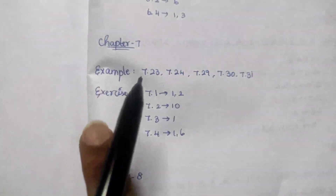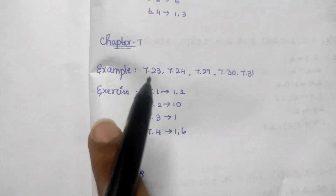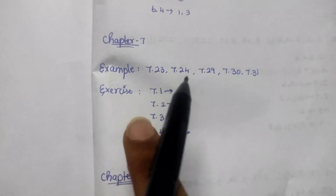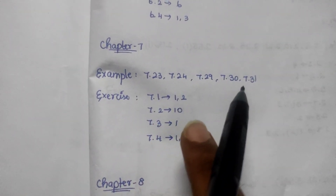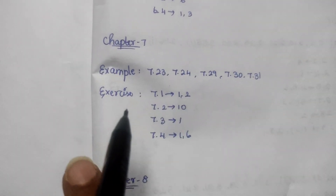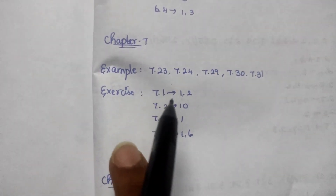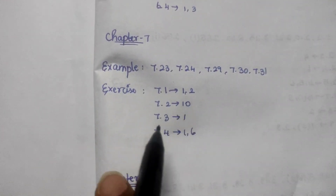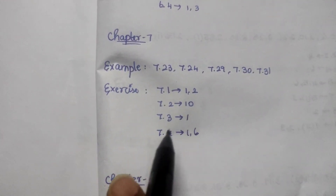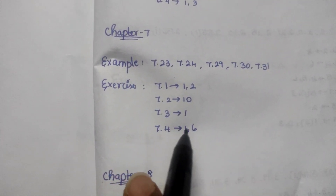Chapter 7: Example 7.23, 7.24, 7.29, 7.30, 7.31. Exercises 7.1, 1, 2, 7.2, 10, 7.3, 1, 6.11, 7.4, 1, 6.11.